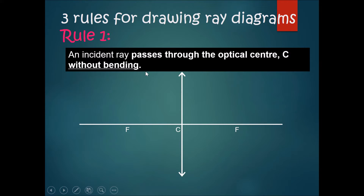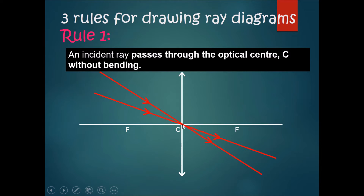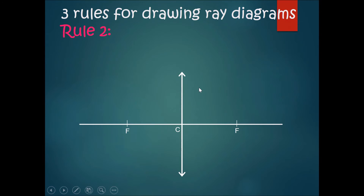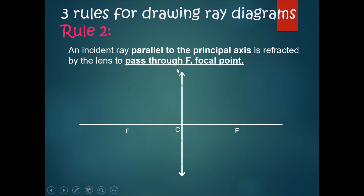Rule number one, which is the basic rule: an incident ray that passes through the optical center C will not bend — it will not be affected by the lens. Any ray that goes through the optical center, no matter at what angle — going straight horizontally, diagonally, or even from the back — will not bend.